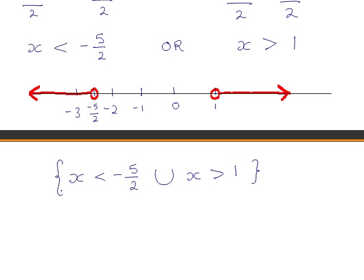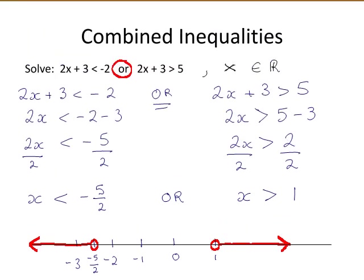This means that any value less than −5/2 or greater than 1, when substituted back into our original inequality statements, should make at least one of the statements true. And if you fill in a value not in either of these ranges — a value between −5/2 and 1 — it will not satisfy either of the two inequality statements.